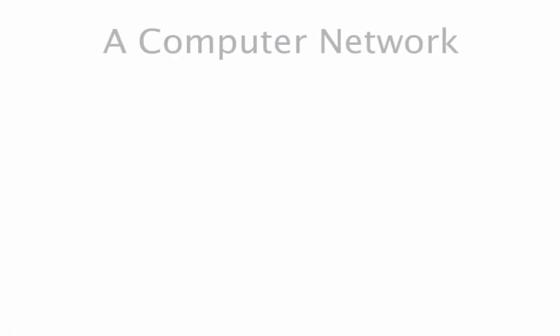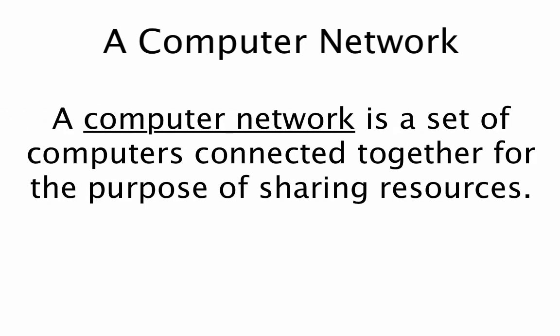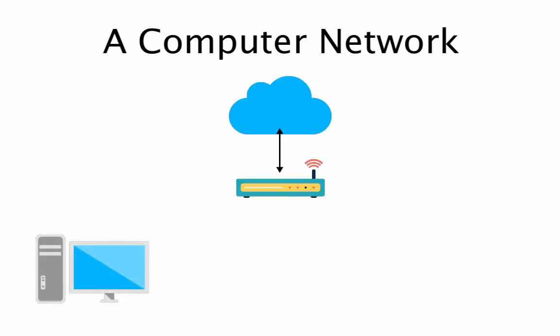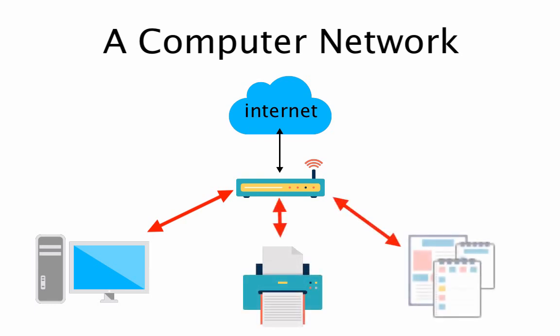Let's start with a basic understanding of a computer network. So what is a computer network? A computer network is a set of computers connected together for the purpose of sharing resources. The most common resource shared is a connection to the internet. Other shared resources can include a printer or a file.